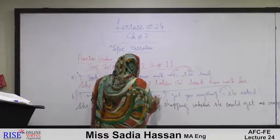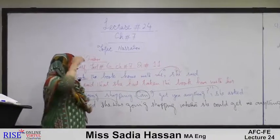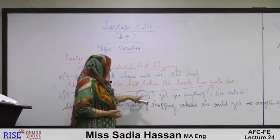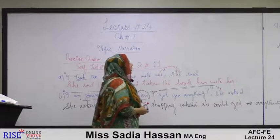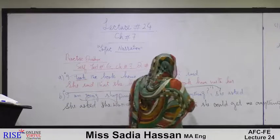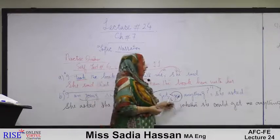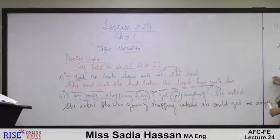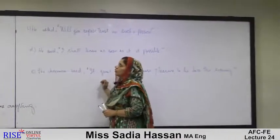'Can' is a modal verb. In interrogative sentences when the sentence starts with a modal verb, we change it into 'whether' or 'if.' First person 'I' changes to 'she' according to the subject: whether she could get. 'You,' a second person pronoun, changes according to the object; since there is no object, it changes to first person: 'me.' Full sentence: she asked she was going shopping whether she could get me anything.